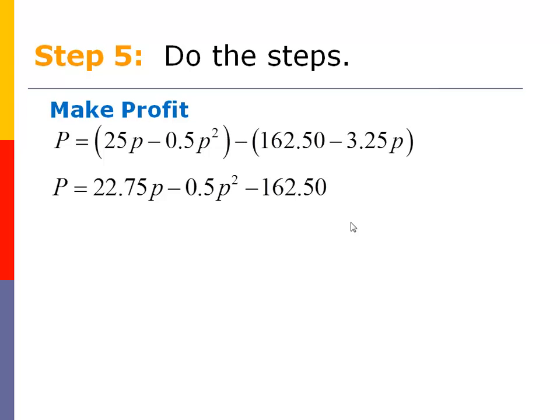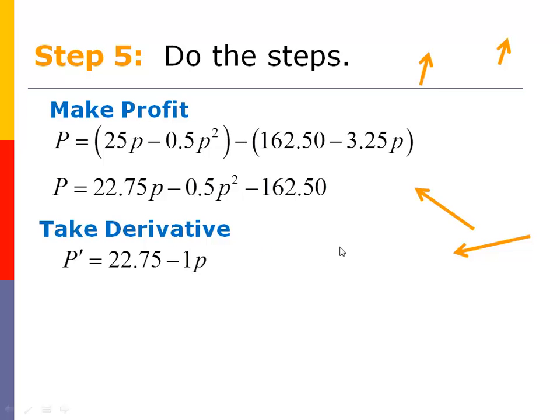Next thing I want to do is take its derivative. Why? Because I want to optimize. Optimize means the greatest in this example because I want the most profit. So when I take the derivative, nice, straightforward, I get a derivative here using the power rule. Next thing we want to do is take the derivative, set it equal to zero. Then we solve for p. And that's nice, straightforward, $22.75. And so now we have our price that will optimize, that will give us the most profit.